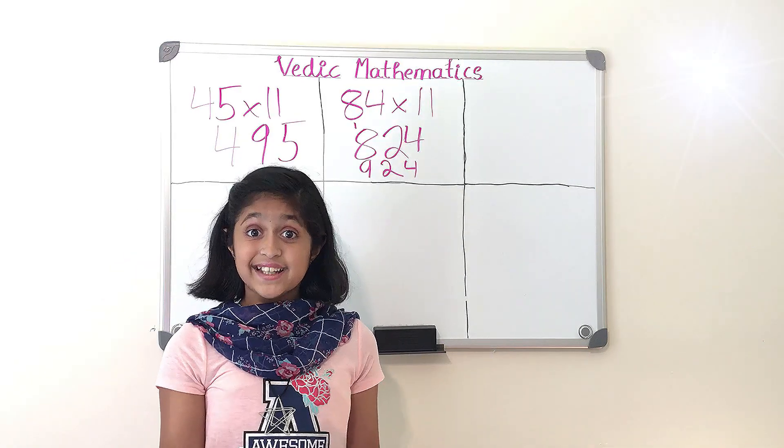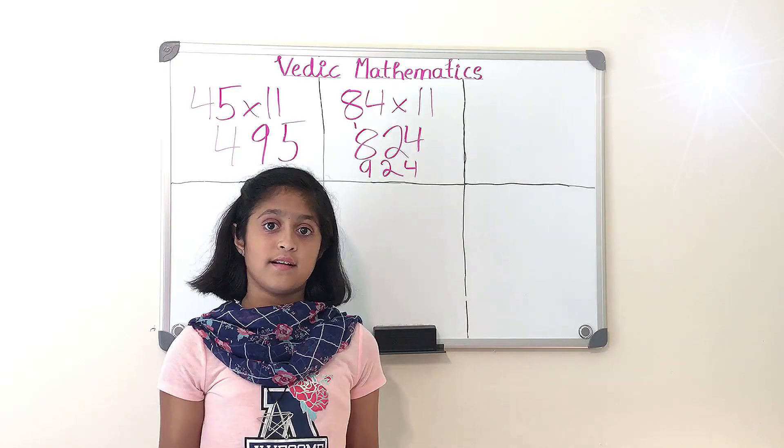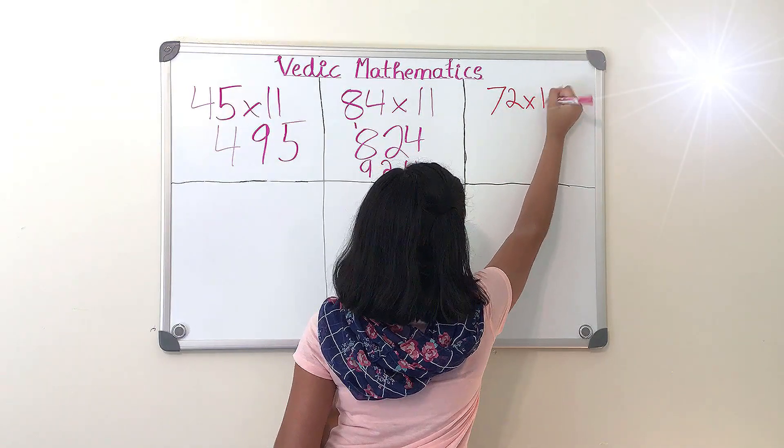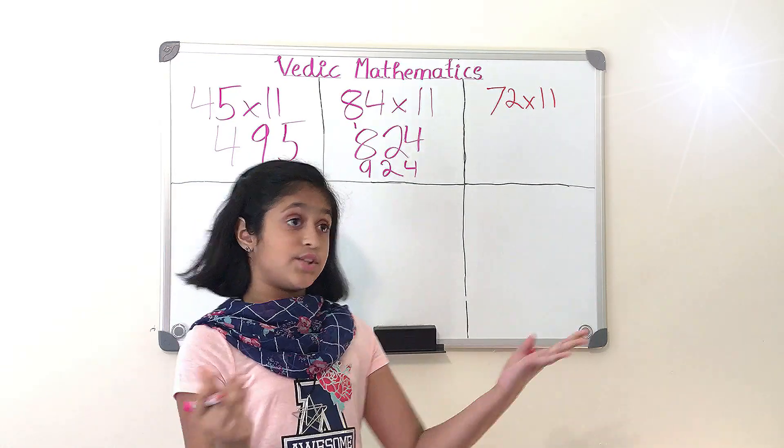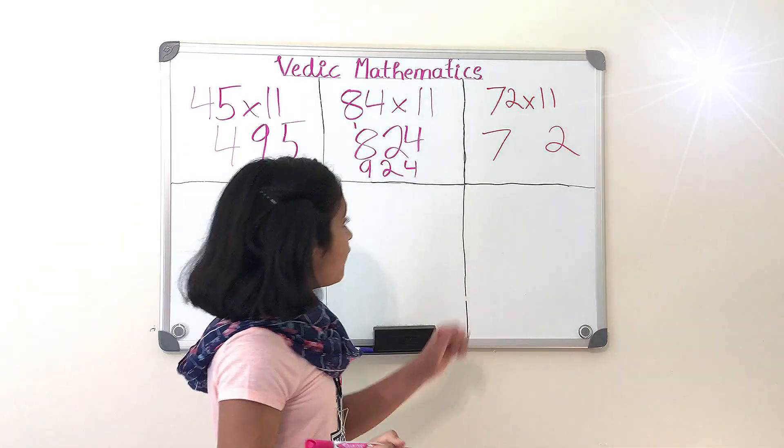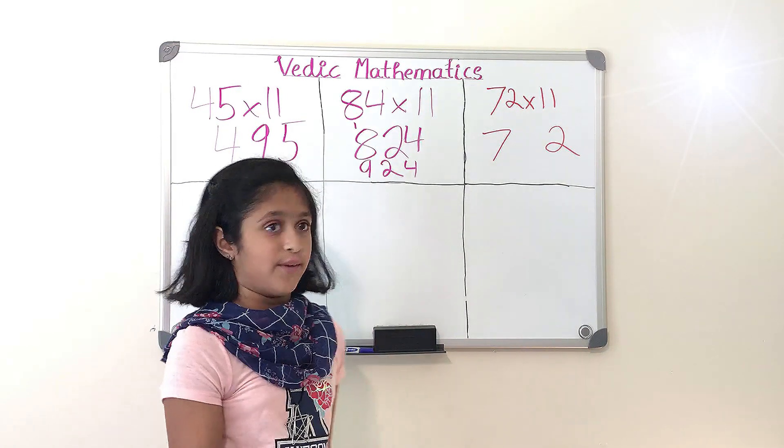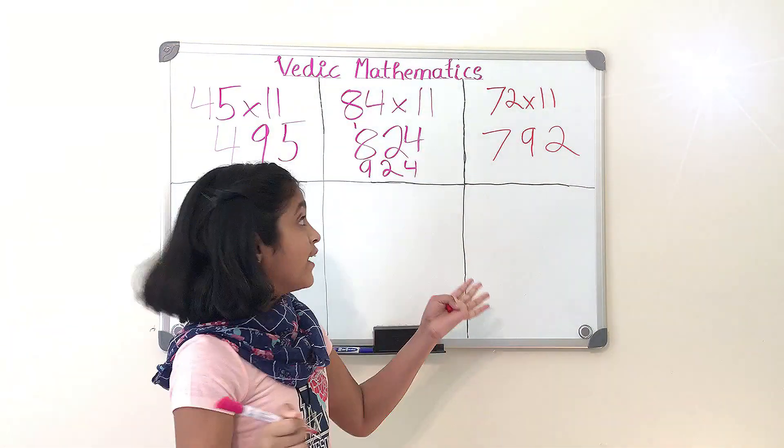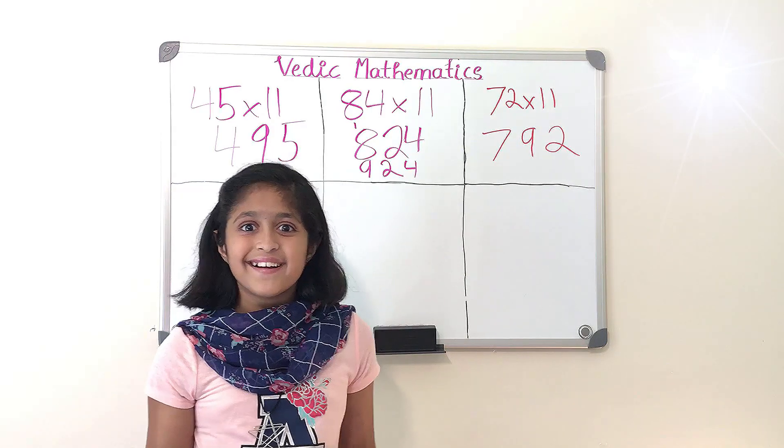How about we do another one? Do you guys have any ideas? All right, so let's write that down. So you have 72 times 11. Now our first step is to separate 7 and 2, so we're gonna do that just like this, and we left one space, one digit to be in the middle. Now we have to add 7 plus 2 and that equals 9, so now we have our answer, it is 792. Wasn't that so simple?